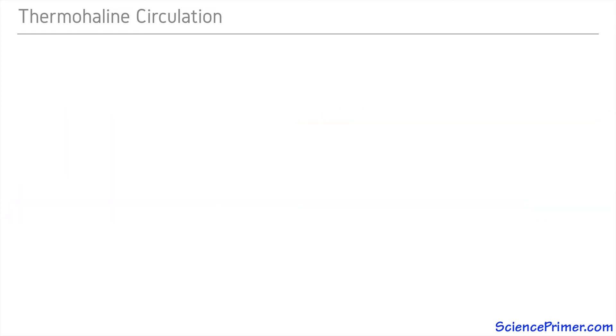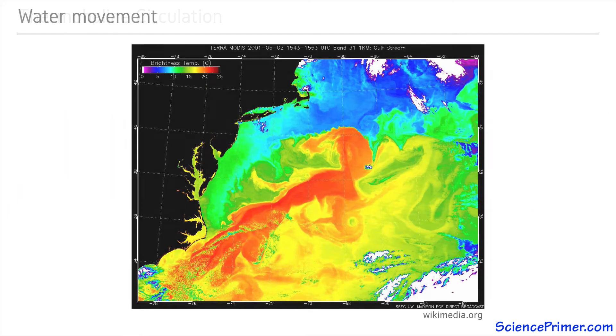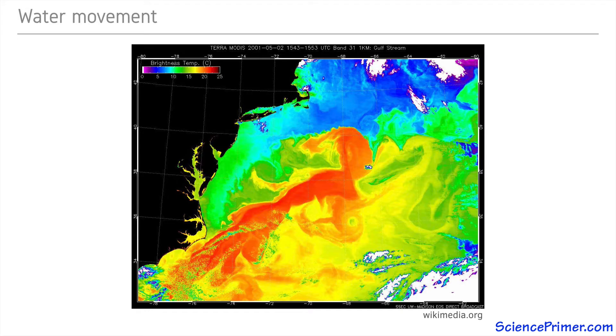Like circulation in the atmosphere, circulation of water within the oceans helps transport the excess solar energy at the equator towards the poles. Like the atmosphere, this flow of energy poleward is driven by uneven heating and is influenced by the Coriolis effect.